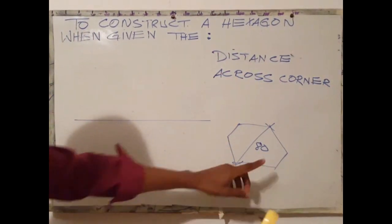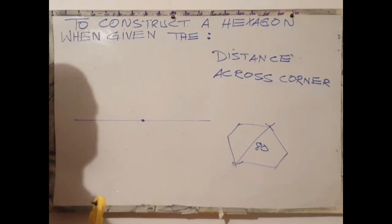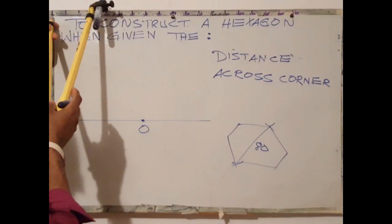The next step is to identify a point for the center for the hexagon. You can label that point O.